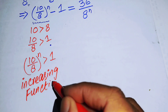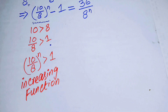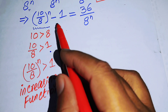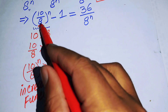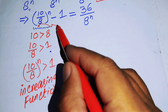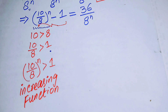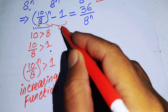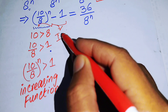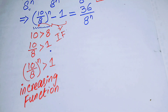You also know that if we subtract 1 from an increasing function, it always remains an increasing function. So our left hand side, (10/8)^n minus 1, is also an increasing function.